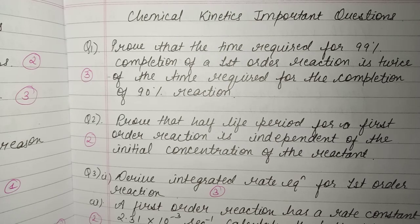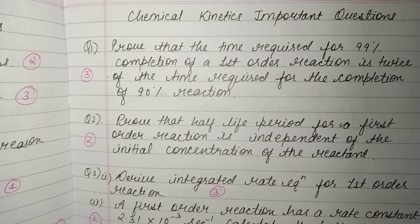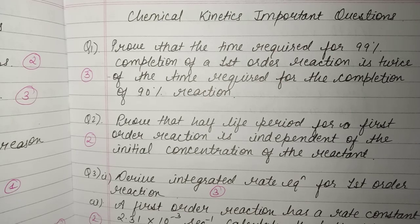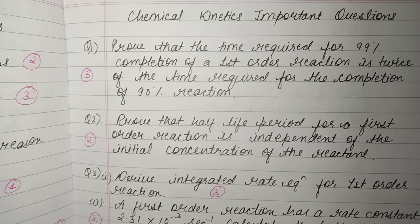The first question is that we have to prove that the time required for 99% completion of a first order reaction will be double the time required for completion of 90% of the reaction. This is a three-mark question and very important.